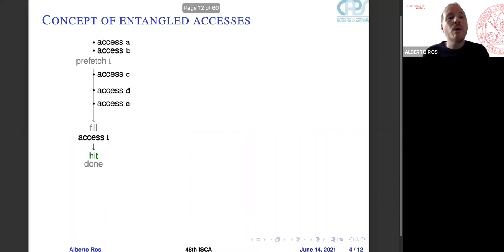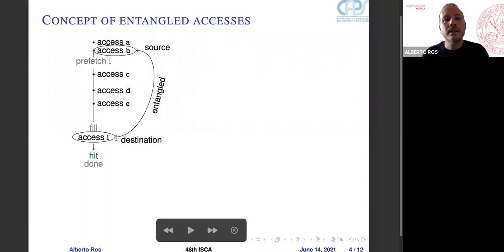Fortunately, we have other accesses that happen before L, and we can relate this event of prefetch to one of these accesses, in particular the previous one to hit. This way we can entangle access B with access L. Access B will be the source, access L will be the destination. Next time that the processor accesses B, we will prefetch for L, and therefore we will have a timely prefetch for L.